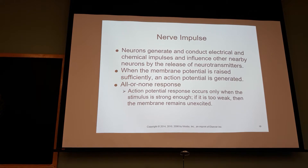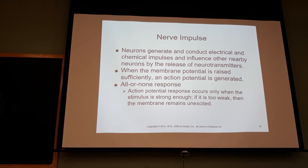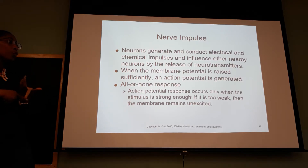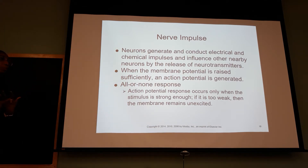Nerve impulses work by the same action potential mechanism and go at a really rapid rate. What drives them is neurotransmitters. You have different neurotransmitters — we talked about epinephrine and norepinephrine. Acetylcholine is a neurotransmitter. GABA is a neurotransmitter — when you give Neurontin, it's a GABA inducer. Dopamine is a neurotransmitter.